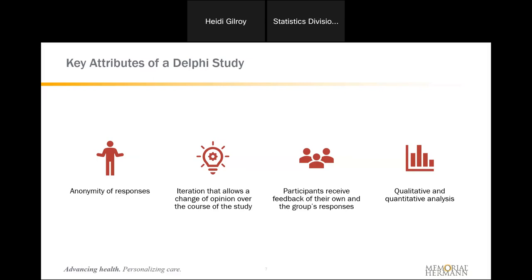The other key attribute is iteration — essentially asking the same or similar questions over and over again. This iteration allows a change of opinion over the course of the study. When we're looking for consensus, we want to make sure that folks can be informed or can learn new things as part of the process. It can be hard to change your opinion when you're in a room with everyone else, but asking over and over in this anonymous way really helps make sure that people are able to change that opinion and come to a consensus.